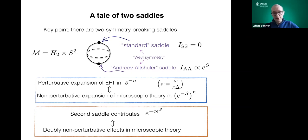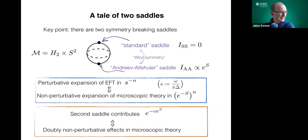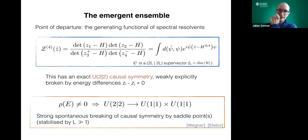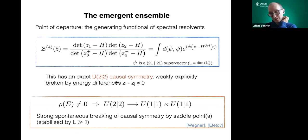The fact that the mean level spacing is non-perturbatively small also tells us that the effective field theory is very good — it is valid precisely in the regime we want to investigate, where the energy separation is naturally very small.